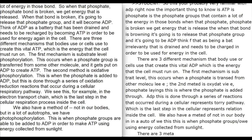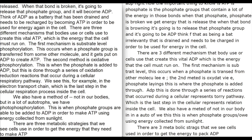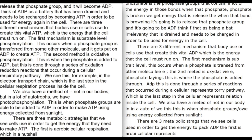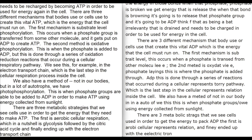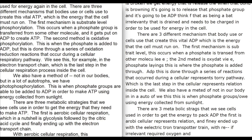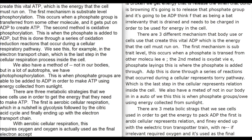There are three metabolic strategies that cells use to get the energy they need to make ATP. The first is aerobic cellular respiration, which in a nutshell is glycolysis, followed by the citric acid cycle, and finally ending with the electron transport chain. Aerobic cellular respiration requires oxygen, and oxygen is actually used as the final electron acceptor in the process.